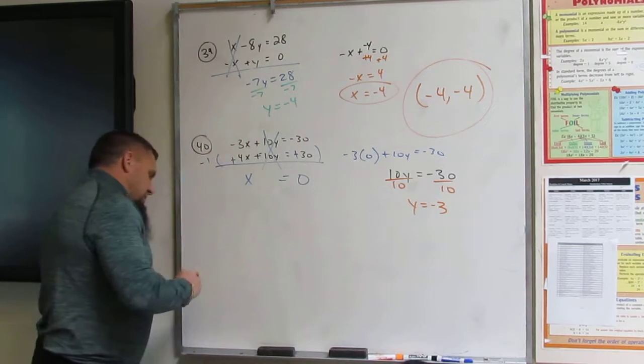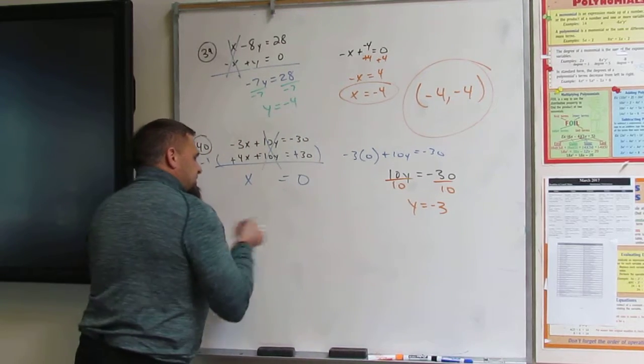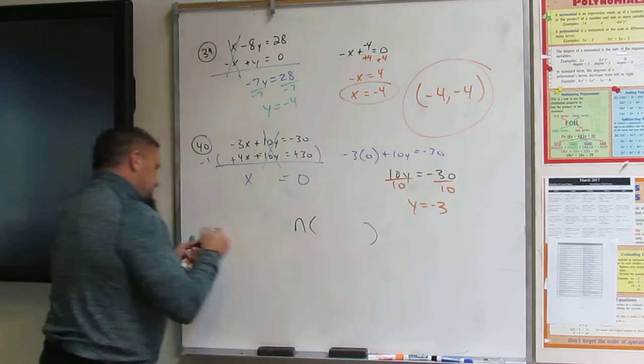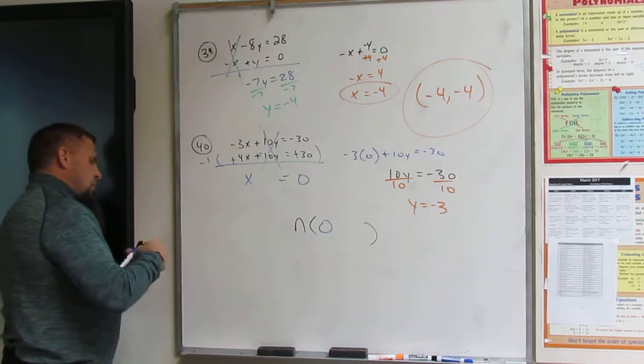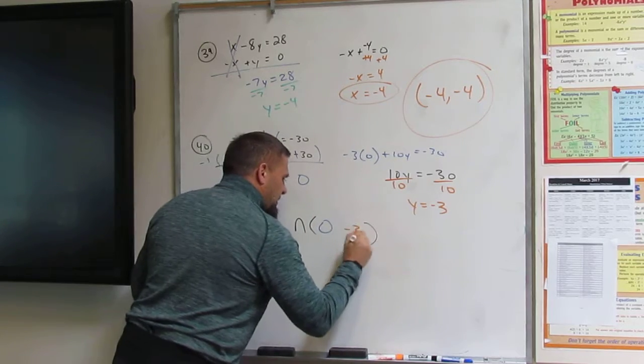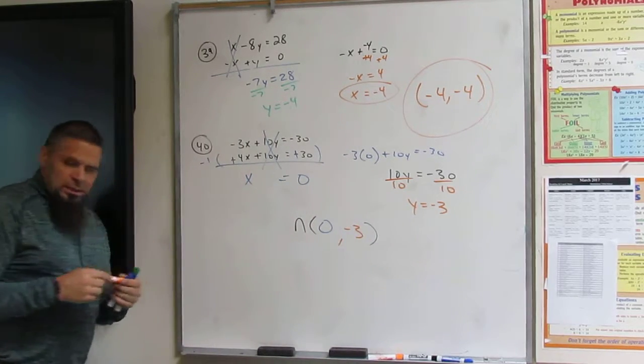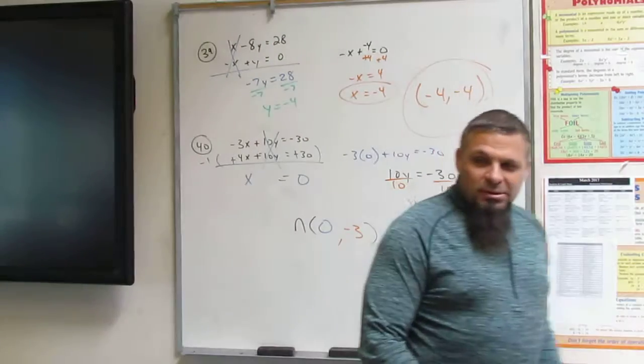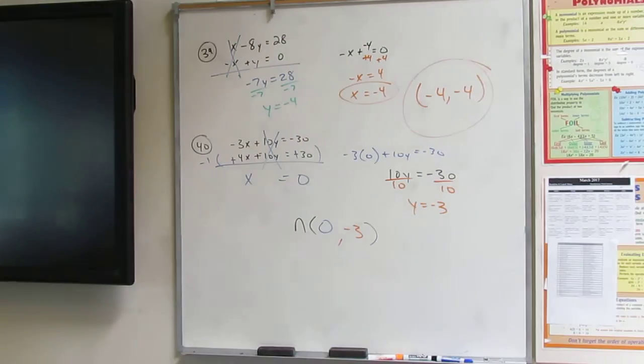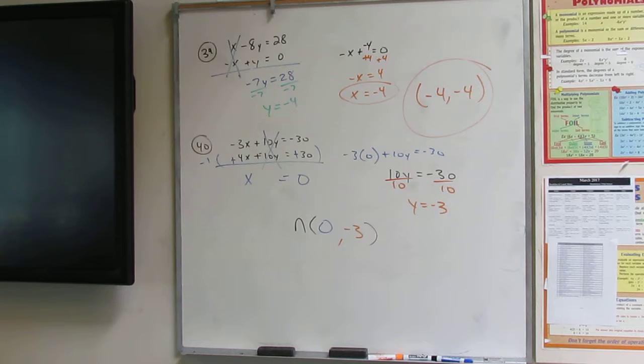So where is the intersection? The intersection is at 0, negative 3. Boom! Oh, wow. I thought it was the other way. So I just did these. That's okay. That's okay.